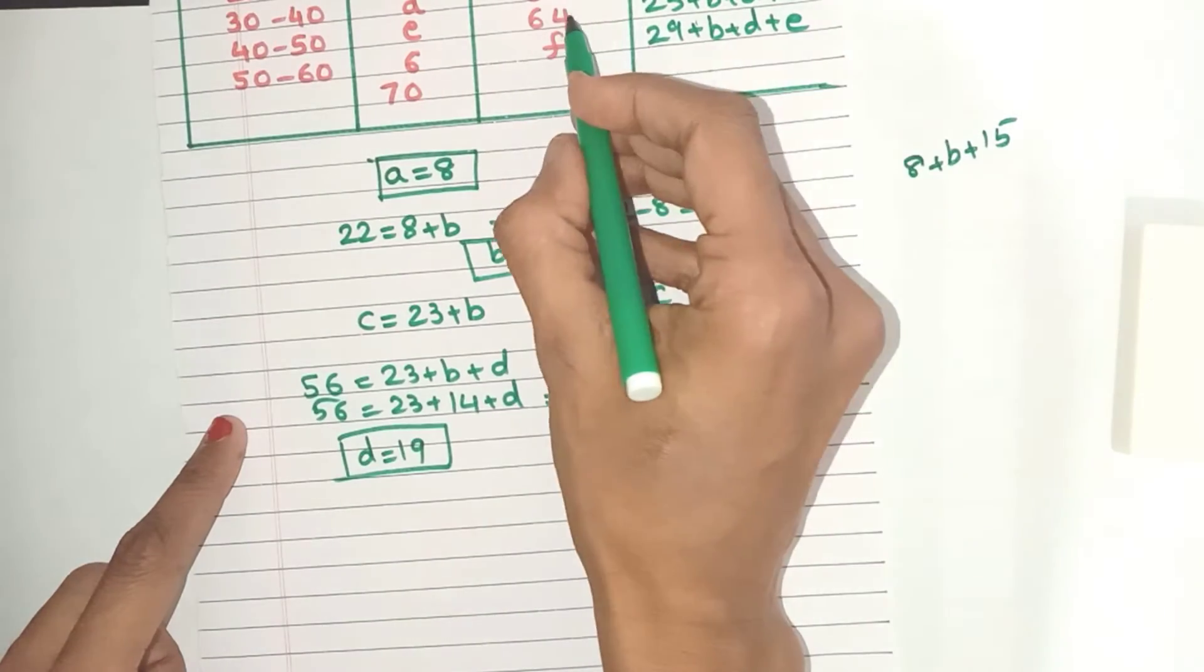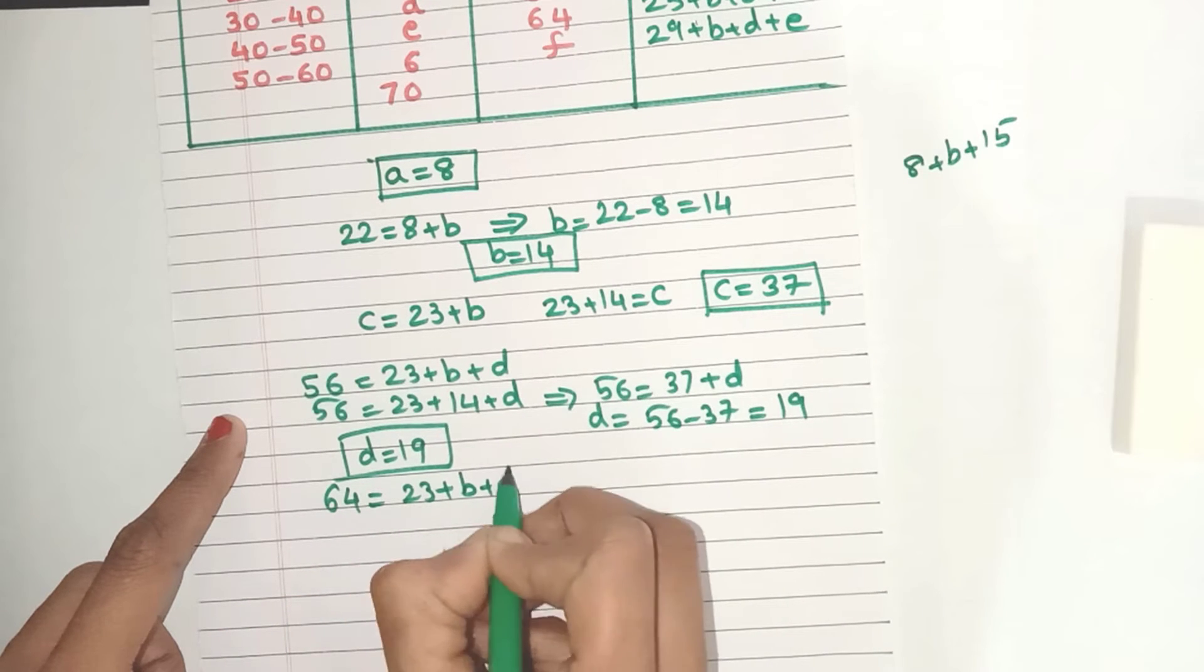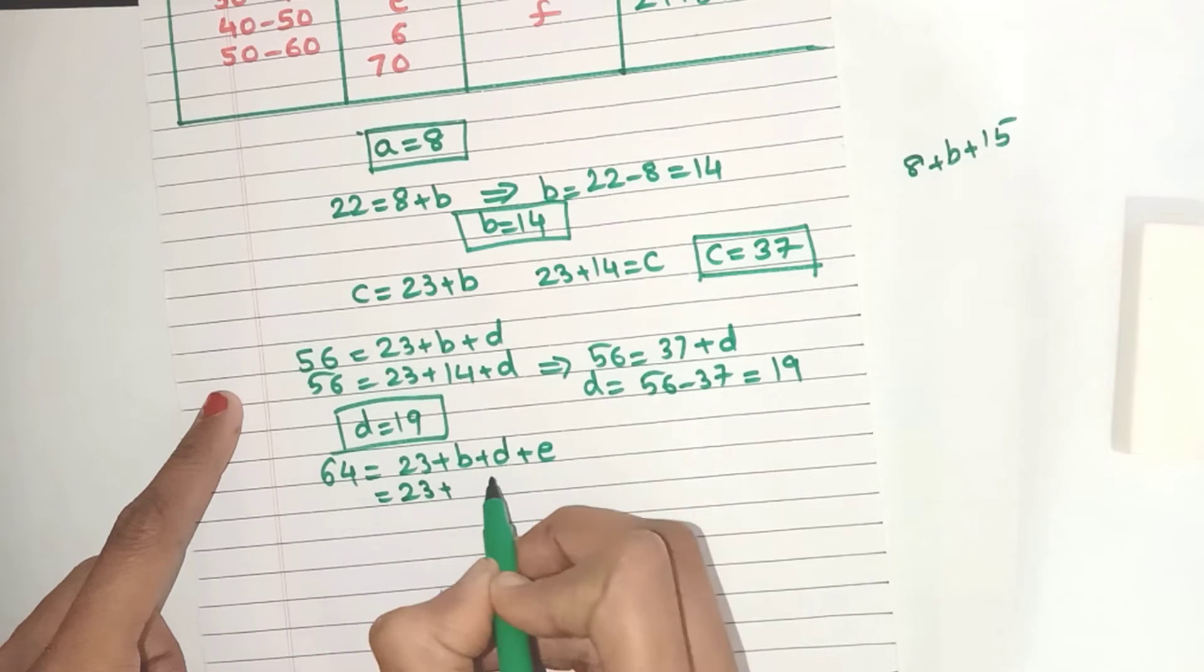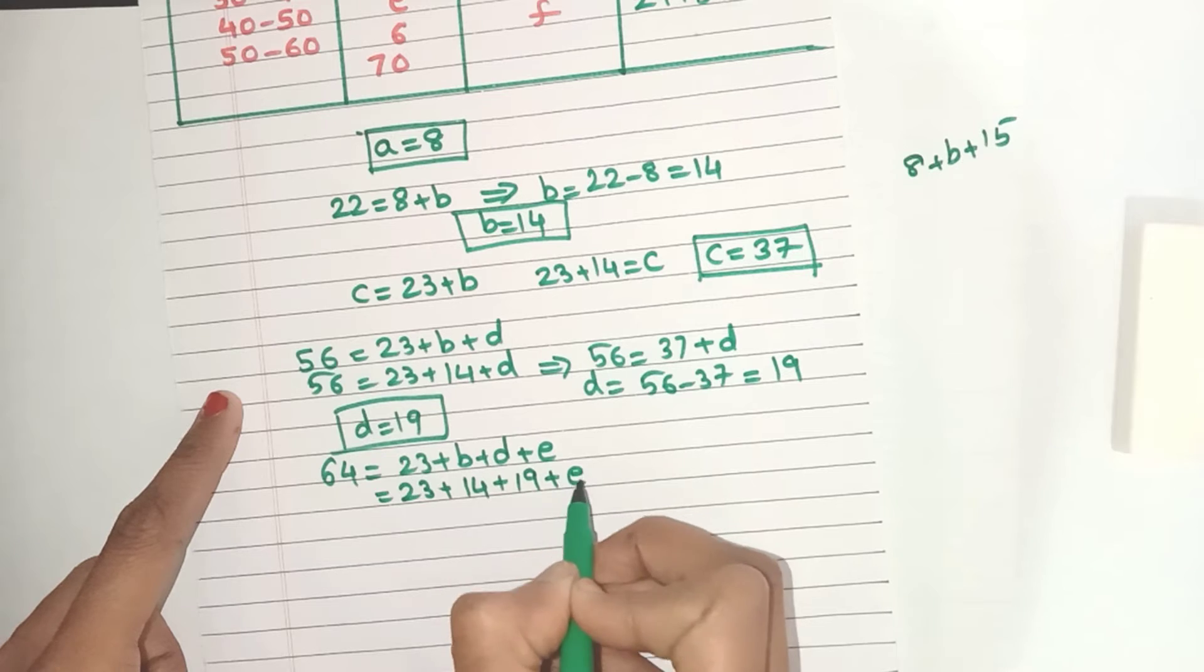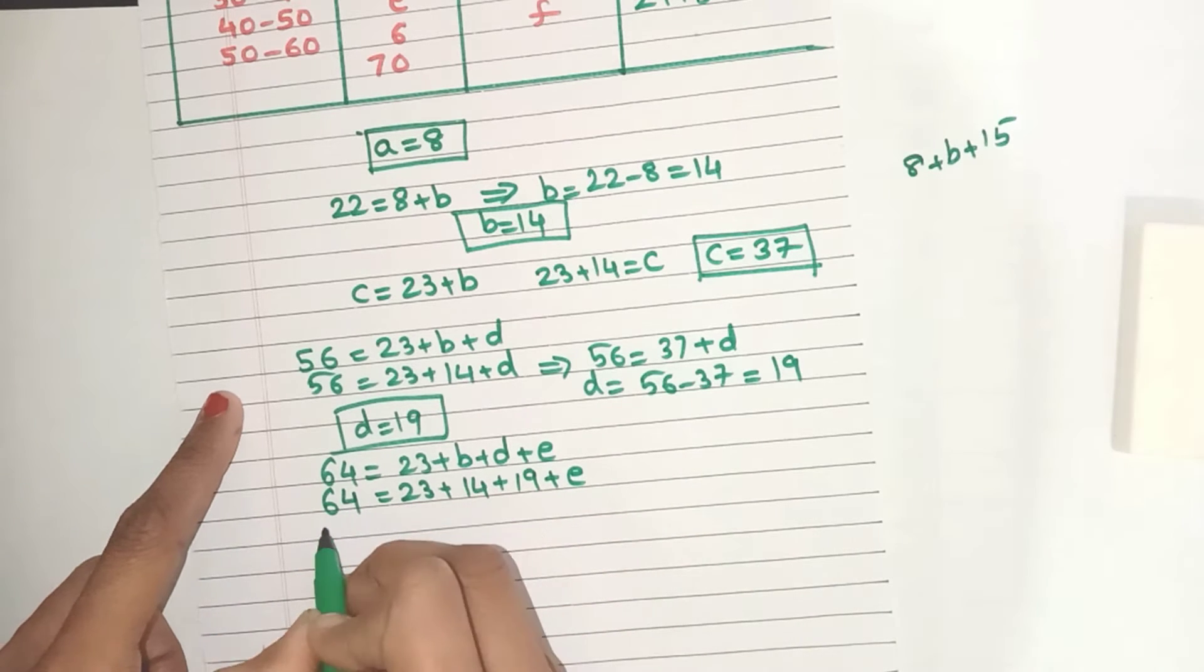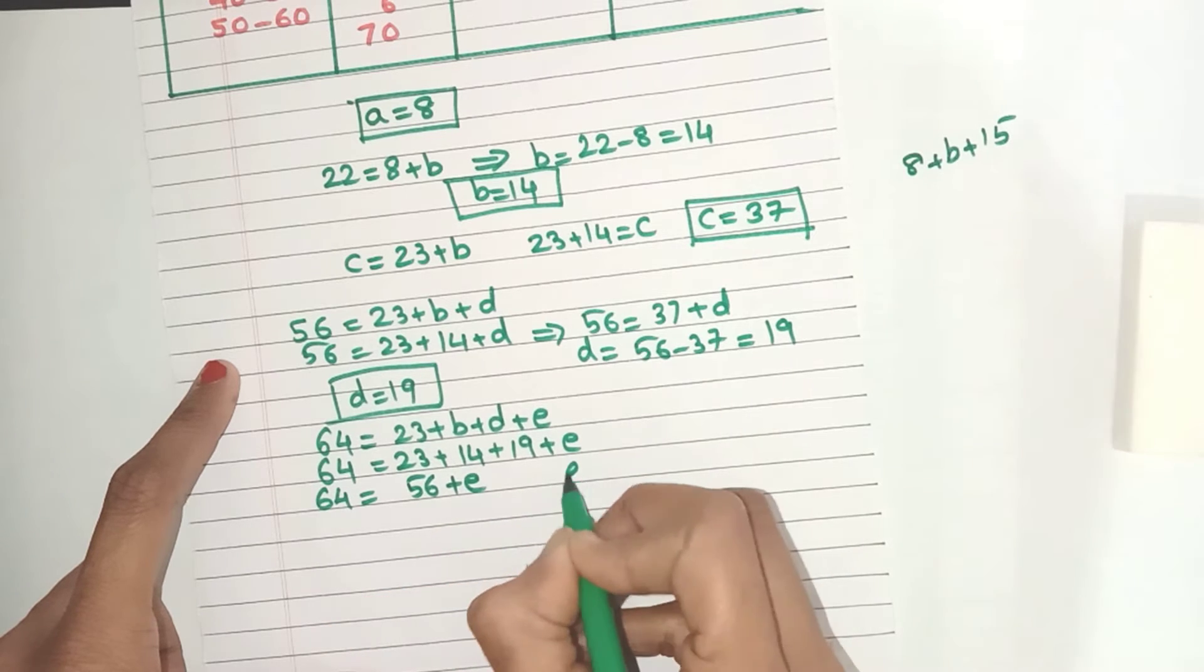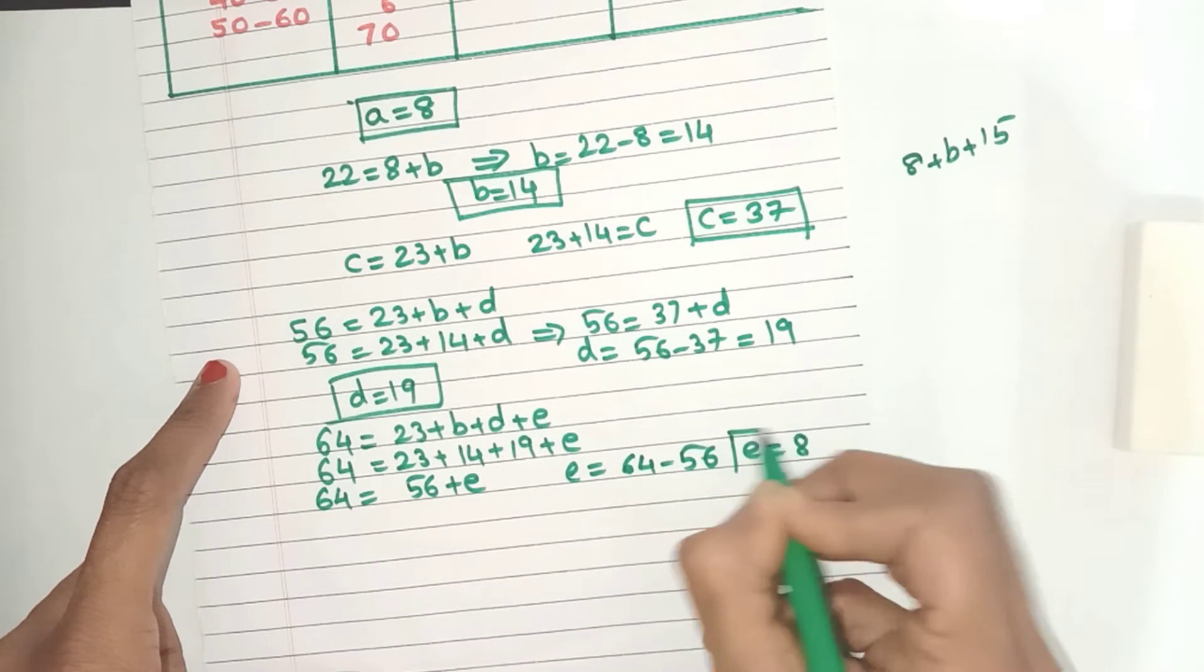Now what else is remaining? Yes, these two. So 64 equals... now what are the values we already know? B is 14, D is 19. E we have to find out. So 64, now this comes up to 56 plus E. So E is equal to 8.